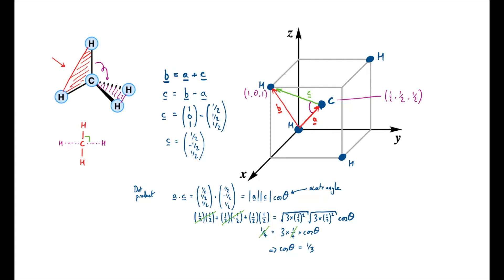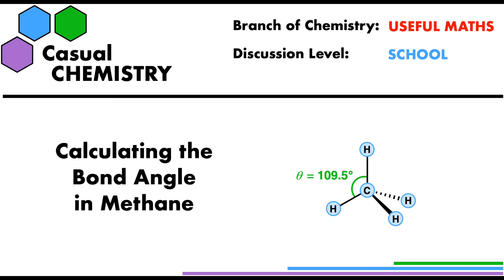We need to be careful: the dot product gives the acute angle between vectors a and c as drawn from the same origin, which turns out to be 70.5 degrees. But that's not the bond angle — the actual bond angle is the supplement on the straight line, so 180 − 70.5 = 109.5 degrees, which is exactly what we'd expect for a tetrahedron. Okay, I hope you found the video useful. If you did, do consider giving it a like and subscribing to my channel, and let me know if there are other chemistry topics you'd like me to talk about.